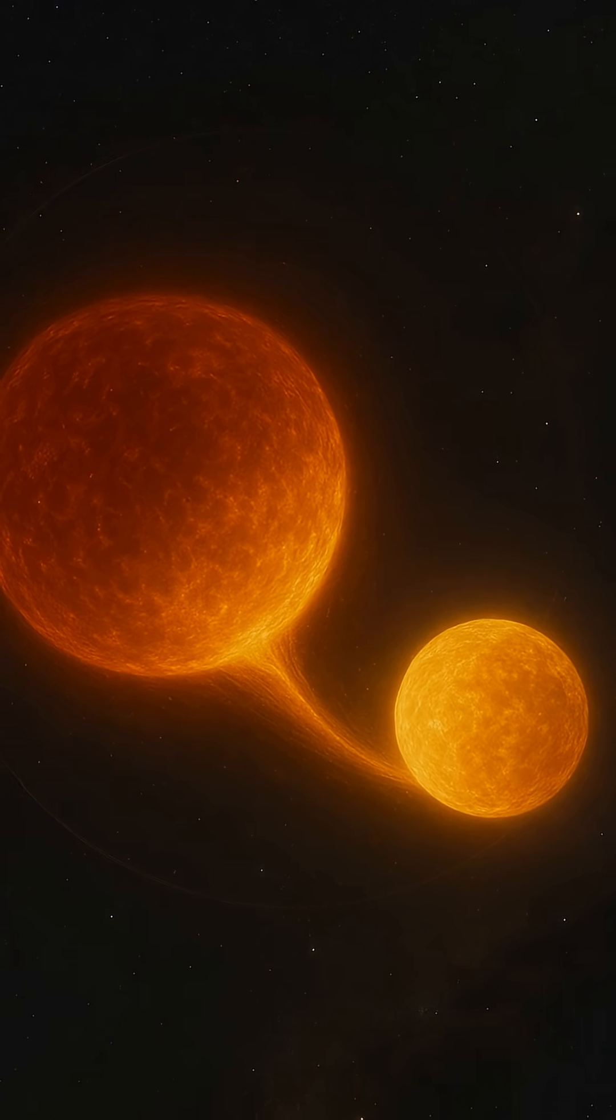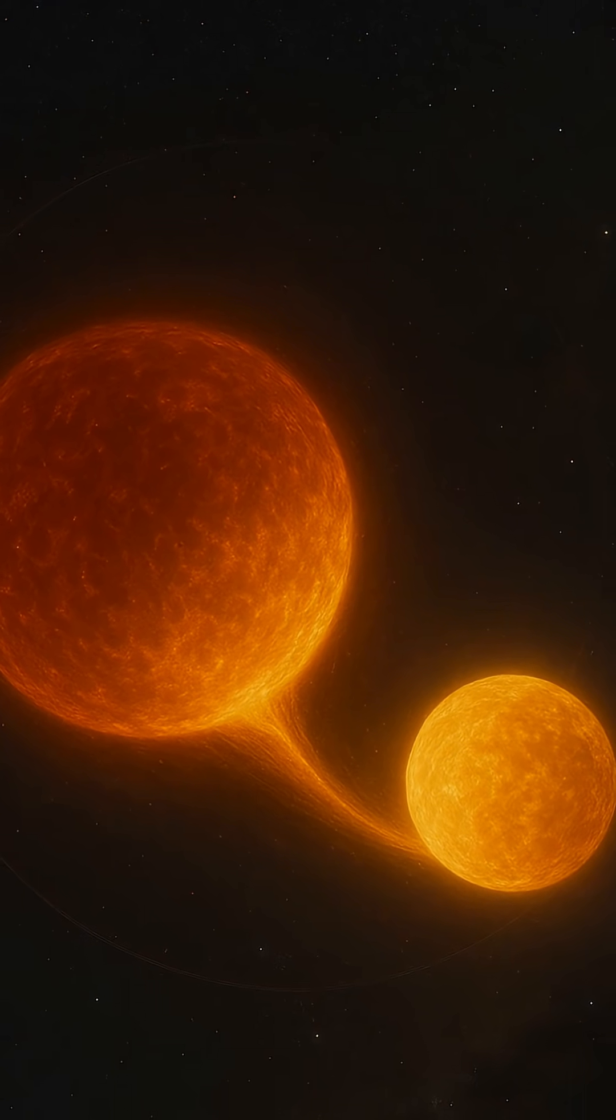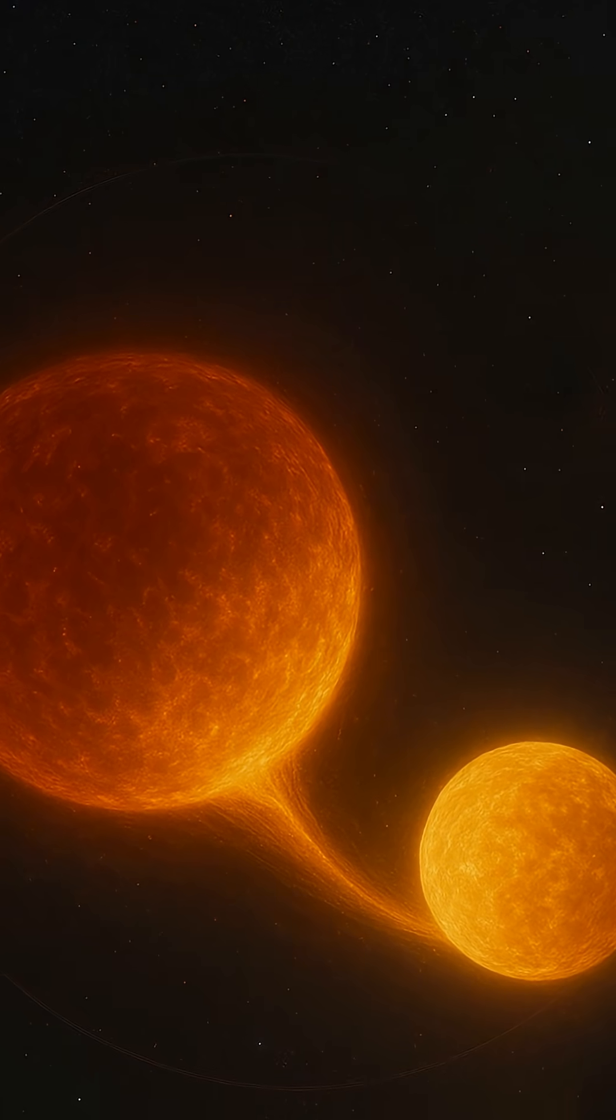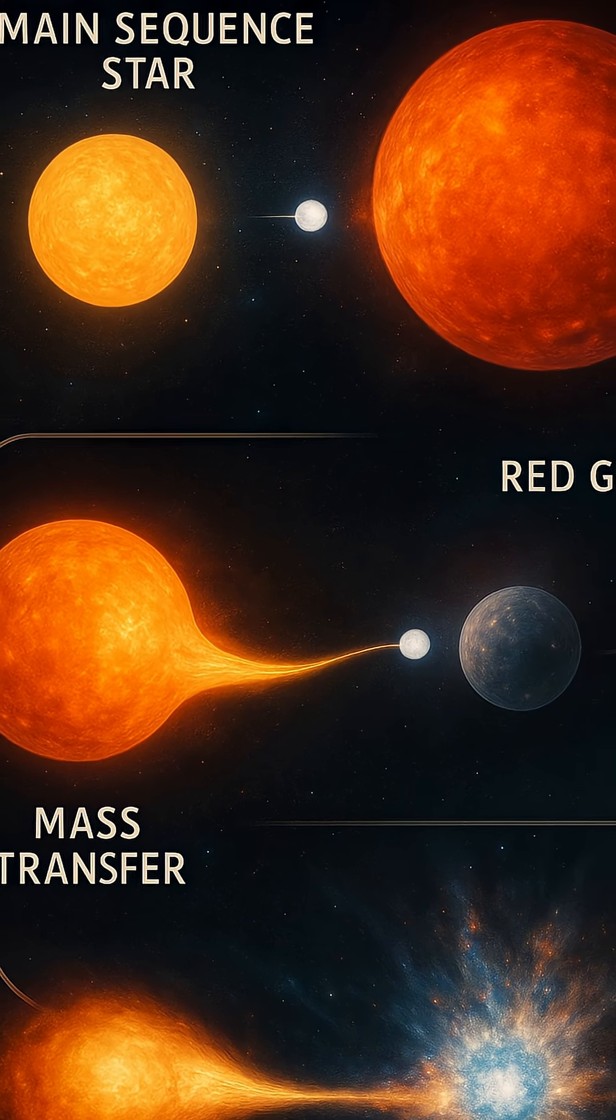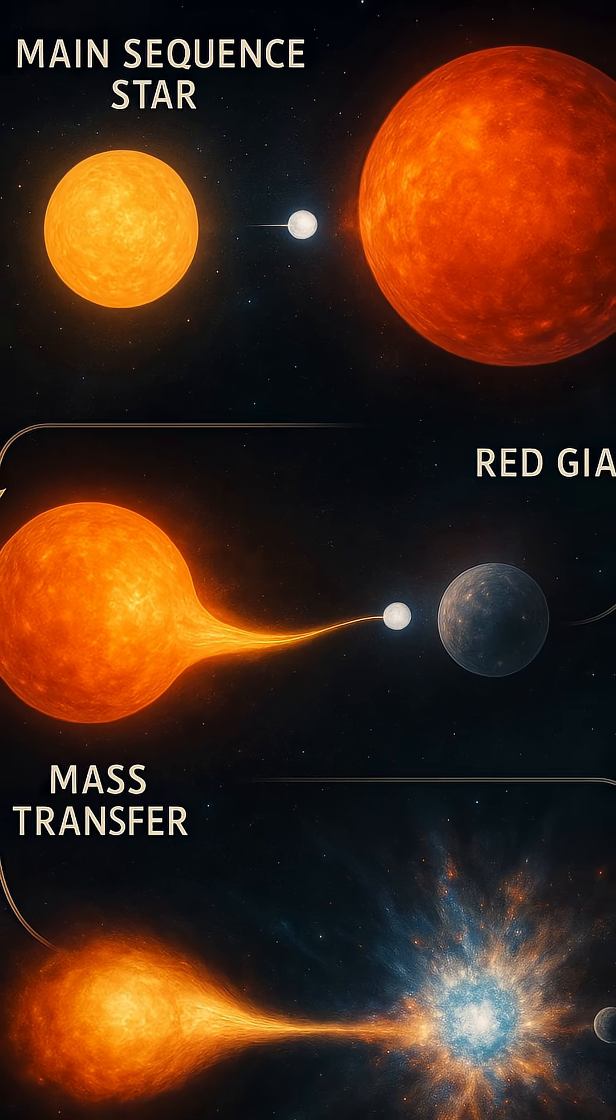At first glance, a binary system might appear like a single flickering light. But upon closer observation, it reveals a tale of two stars, sometimes equal in mass, sometimes vastly different, each tugging on the other with invisible gravitational threads.